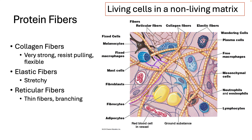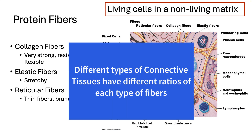Reticular fibers help give support and hold together delicate structures. You can see the reticular fibers up here forming a mesh network. Although this picture shows equal amounts of all three protein fibers, different types of connective tissue actually have varying combinations of these fibers. For example, bone has almost all collagen fibers for strength, and the connective tissue under your skin has lots of elastic fibers. Some connective tissues, like blood and lymph, don't normally have protein fibers at all.